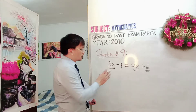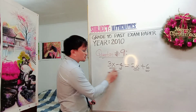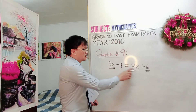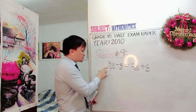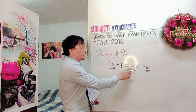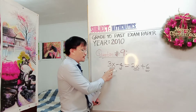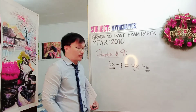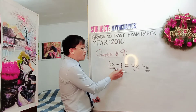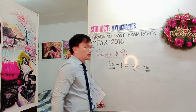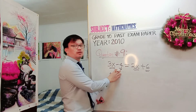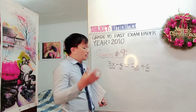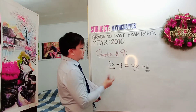Why are they like terms? The 3X and 2X are like terms because of the literal coefficient, which is X. It doesn't matter about the numerical coefficients 3 and 2 — you check the literal coefficient X. Similarly, negative 4 and positive 6 are like terms because they are what we call constants.